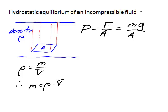So we're going to replace the mass here with density times the volume. Density times the volume. Don't forget we have our little g over A.